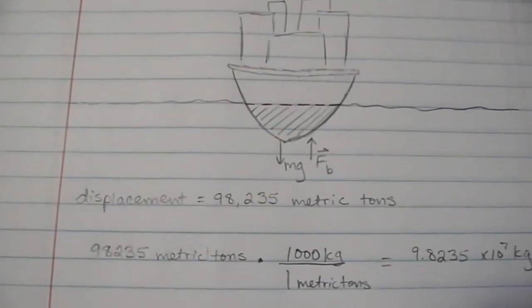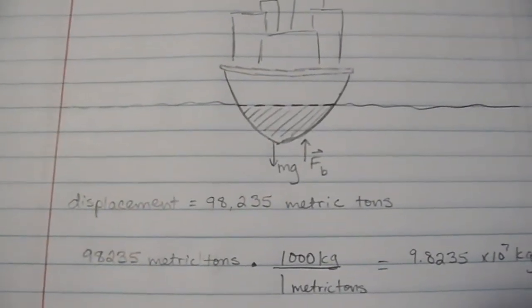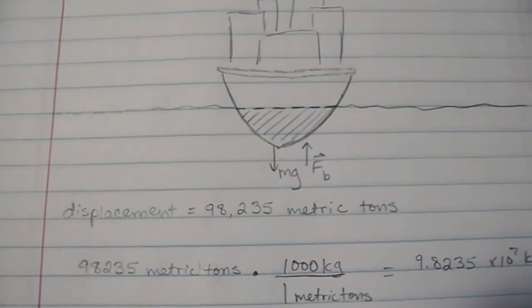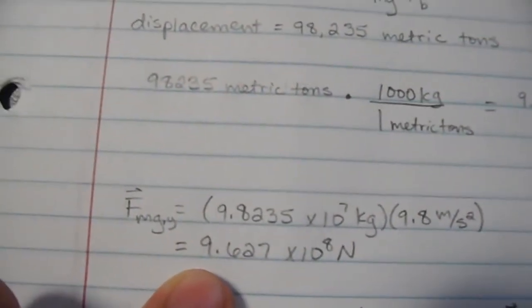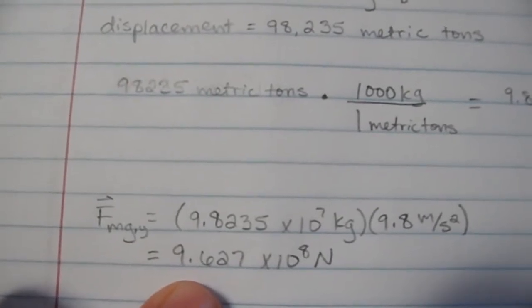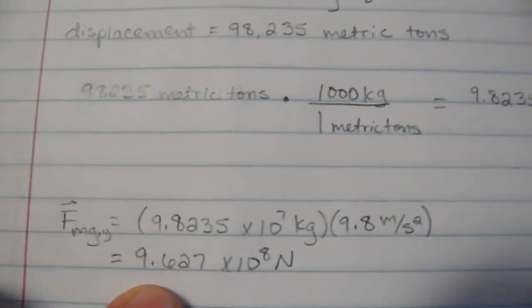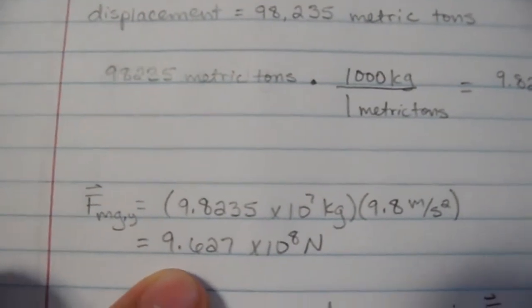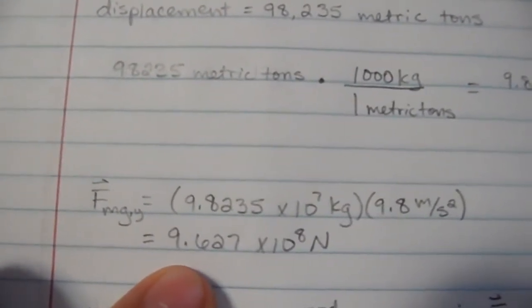Then we want to calculate the force of mg, or the force of gravity. This is pretty simple: 9.8235 times 10 to the 7th times 9.8 meters per second squared gives us 9.627 times 10 to the 8th newtons.